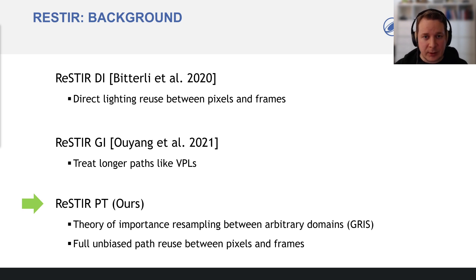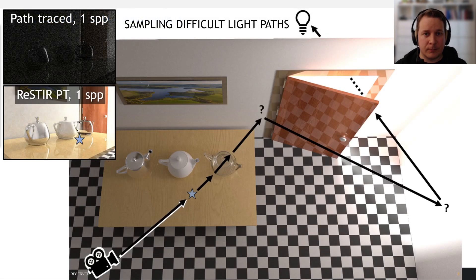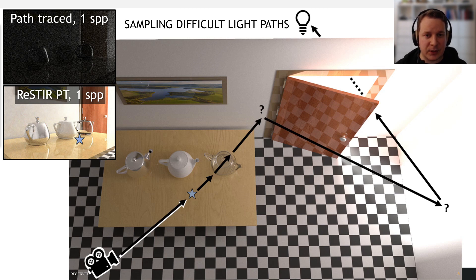ReSTIR PT is based on our mathematical foundation of ReSTIR: generalized resampled importance sampling, which allows resampling from arbitrary domains and modifying the samples on the fly. When ReSTIR PT finds a path that transports energy, it resamples it to other pixels and frames, retaining proper path geometry — for example, through glass. Resampling between paths in the previous and current frames improves the sampling distribution, which reduces noise.